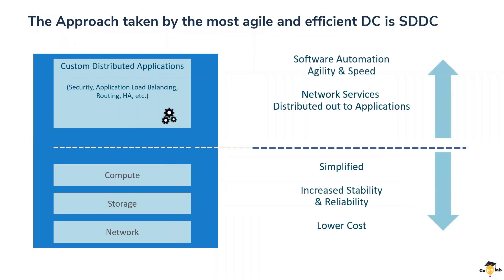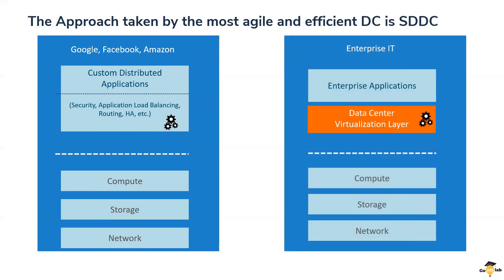With this new approach that Google, Amazon, and Facebook adopted, they created custom distributed applications and took all the intelligence out of the hardware, developing that intelligence in software in a distributed fashion. Since everything ran in software, it gave them a lot of agility and speed. All services were deployed in a much more distributed fashion, and applications became completely hardware-agnostic and vendor-agnostic. Because of this approach, hardware became much more simplified, scalable, robust, and reliable — and most importantly, much cheaper, since commodity hardware could be used and intelligence pushed into it.